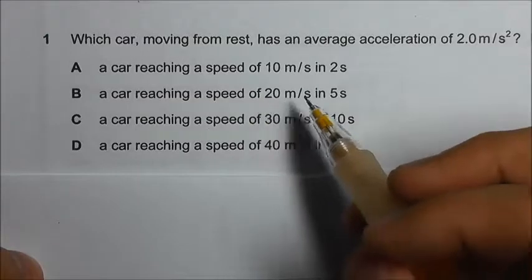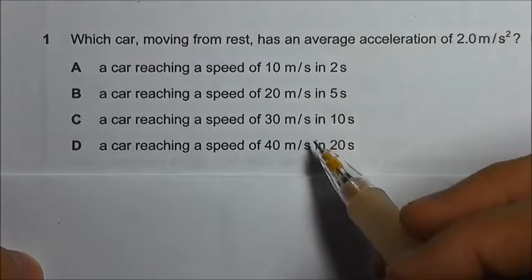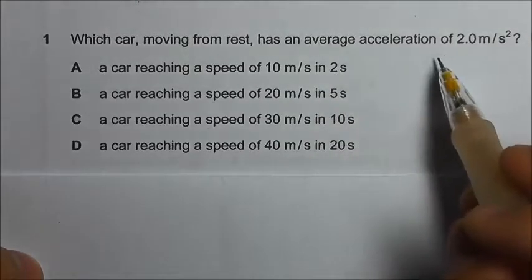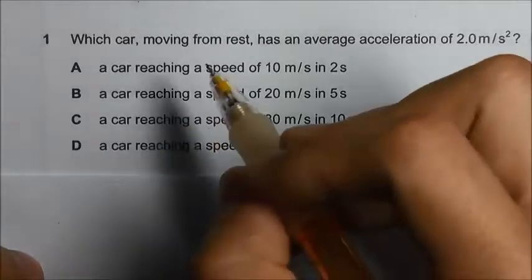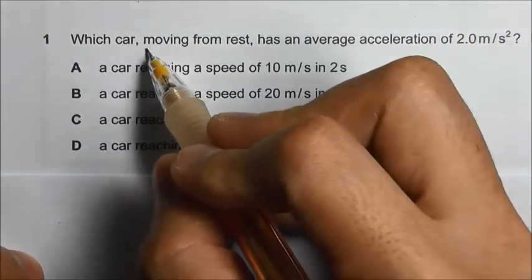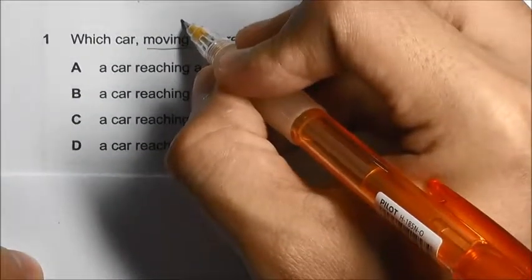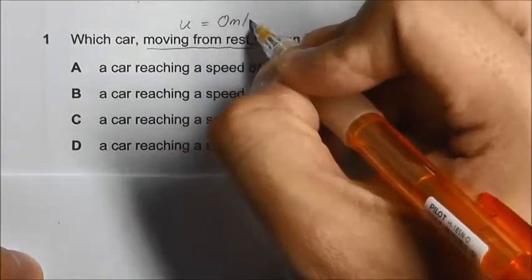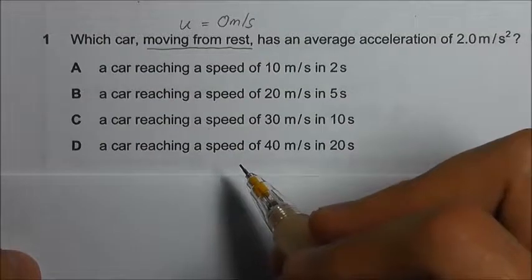For this question, we need to calculate the acceleration for the four cases and check which one has an average acceleration of two meter per second square. The car is moving from rest, so this means that the starting velocity u is equal to zero meter per second. We need to use the formula